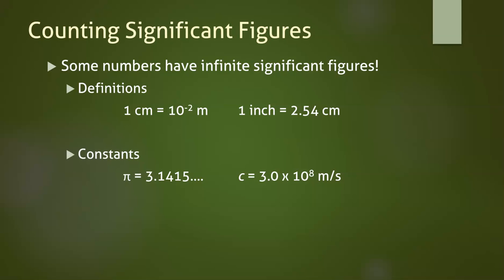Constants are another group of numbers that you can ignore for sig fig purposes. Some of these numbers may be irrational, like pi, or they might be rounded, like the speed of light, which we usually use c for. In either case, treat those numbers as though they have infinite sig figs.